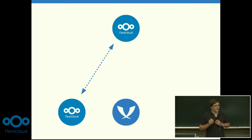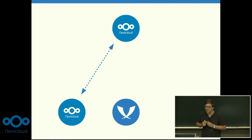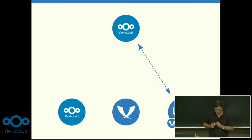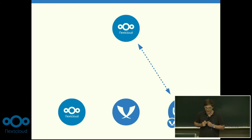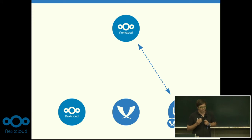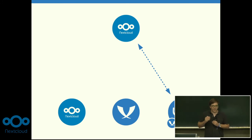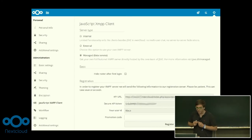We have a simple-to-use internal backend and a more complicated external server installation, so we thought it would be interesting to have something in between. That's why we founded the Federated Communication Association, which provides free XMPP server hosting for small Nextcloud installations. You get your own domain and can use it with every phone or every XMPP client — and it's super easy to set up.